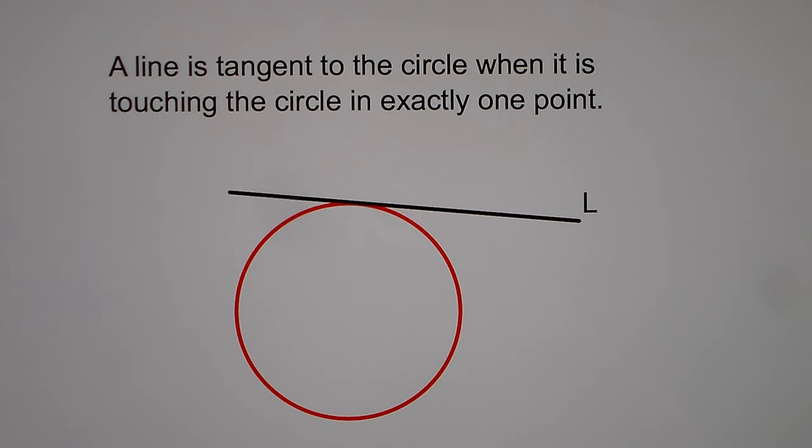So what does the word tangent mean? A line is tangent to the circle when it is touching the circle in exactly one point. So we have this black line here, L. It's only touching the circle exactly at one point, not multiple points, but just one point.